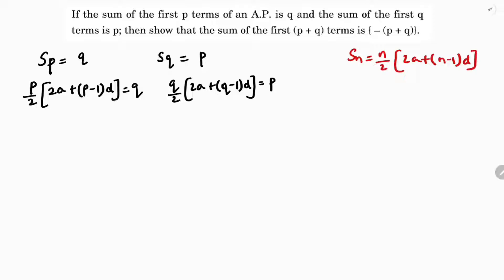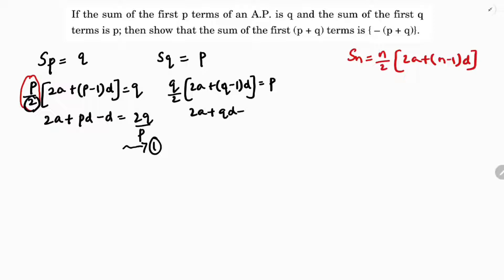Now I will transpose the 2 towards the right side for both equations. From the first equation I get 2A plus PD minus D equals 2Q by P — this is equation 1. From the second equation I get 2A plus QD minus D equals 2P by Q — this is equation 2.